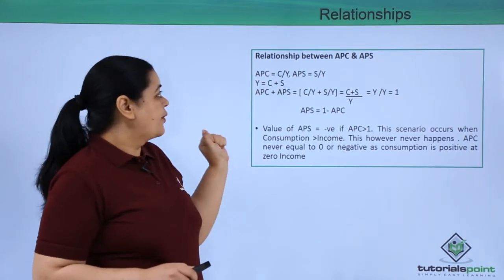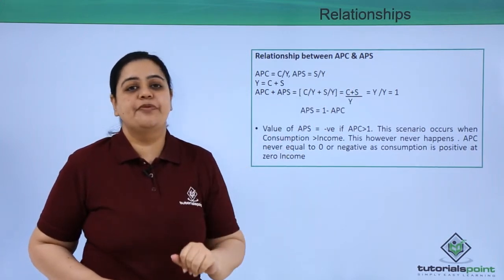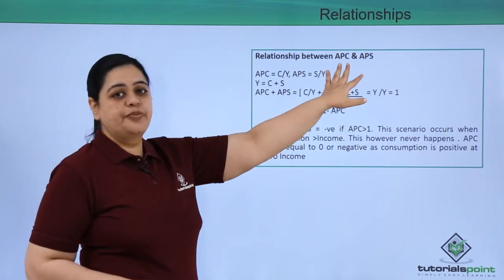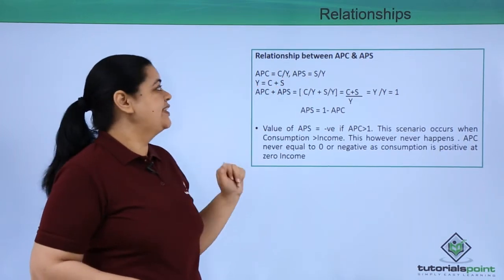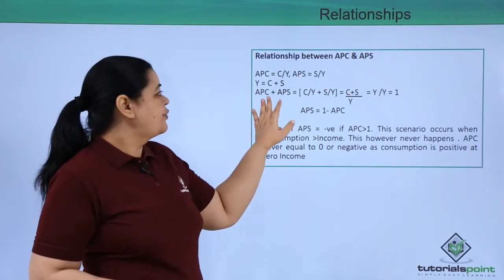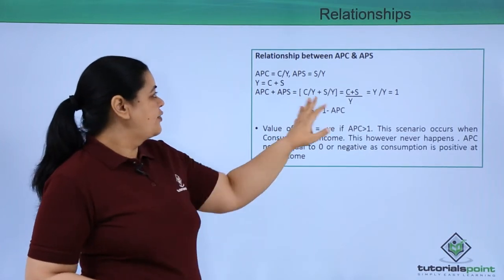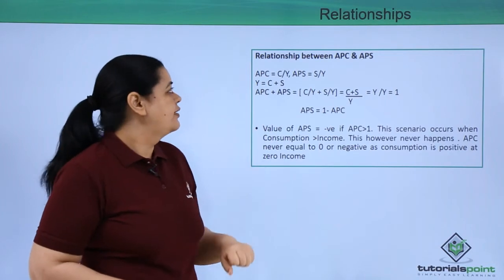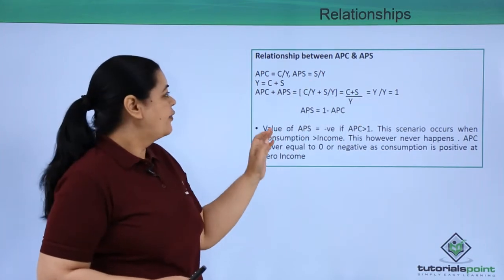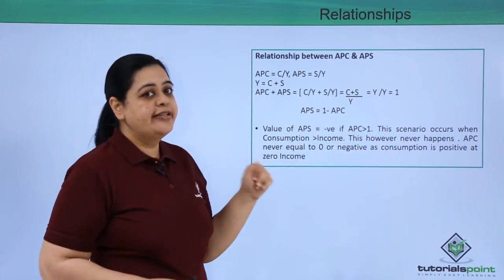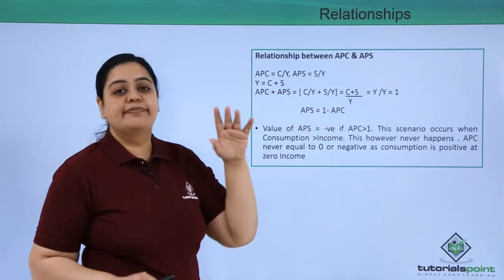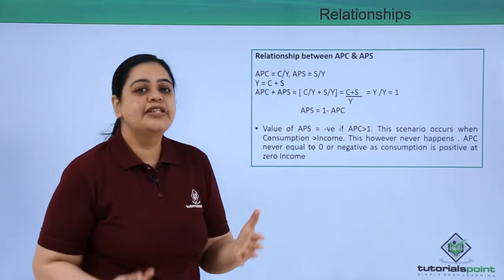Now let's look at the relationship between APC and APS. Since APC = C/Y and APS = S/Y, and we know Y = C + S, adding APC + APS gives us (C + S) / Y = Y / Y = 1. Therefore, APS = 1 − APC. It's important to remember these equations as problems are based on them.